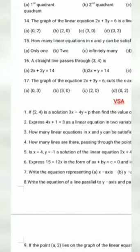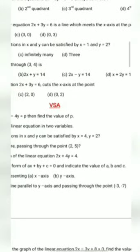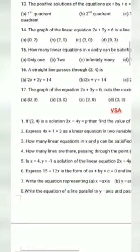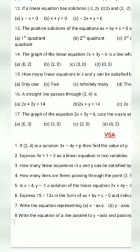Question number 16: a straight line passes through (3, 4). Simply put the value of x equal to 3 and y equal to 4 and see which equation is satisfied. Option A is satisfied by x equal to 3 and y equal to 4, so option A will be correct.